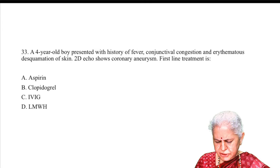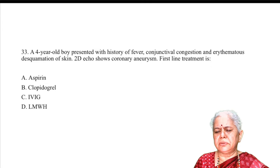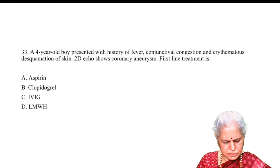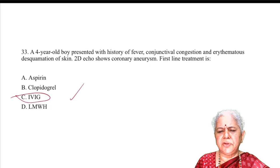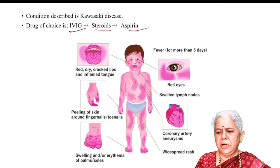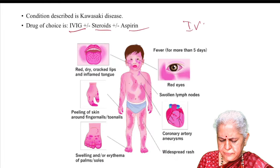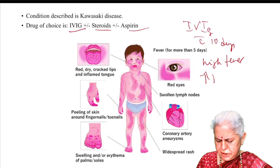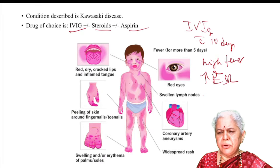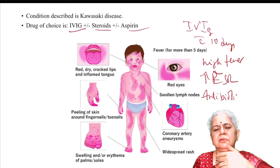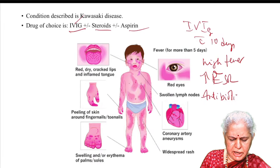A 4-year-old boy presents with fever, conjunctival congestion, erythematous disc formation; 2-day course shows coronary artery involvement. The first drug to give is IVIG — this is Kawasaki disease. In Kawasaki disease: IVIG, steroid, and aspirin. IVIG must be given within 10 days. The typical picture includes high fever, high platelets, elevated ESR not responding to antibiotics, bulbar conjunctival congestion, and strawberry tongue.